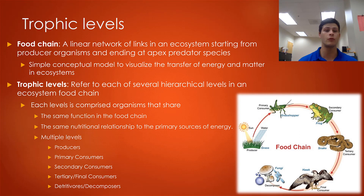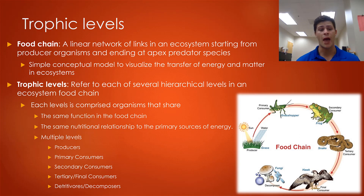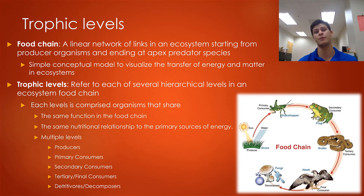Trophic levels refer to one of several hierarchical levels in an ecosystem food chain. Each level is comprised of organisms that share the same niche or function within that food chain, and the same nutritional relationship to primary organisms in terms of energy. There are many different trophic levels within a food chain: it starts with producers, the autotrophs that produce their own food from sunlight, moving then to primary consumers, secondary consumers, tertiary or final consumers, and then detritivores and decomposers.